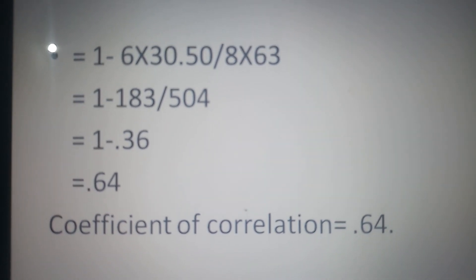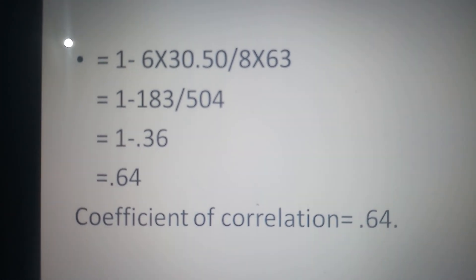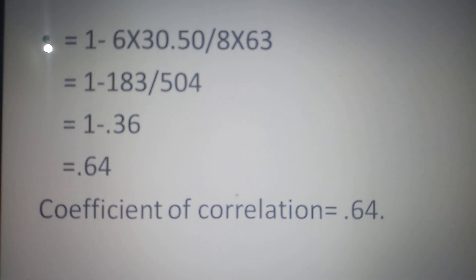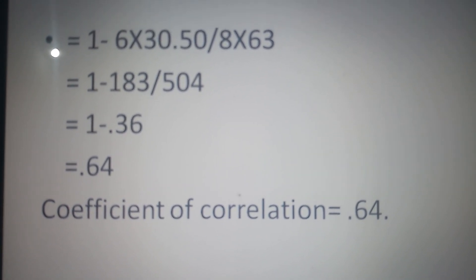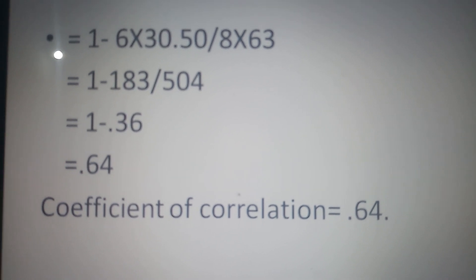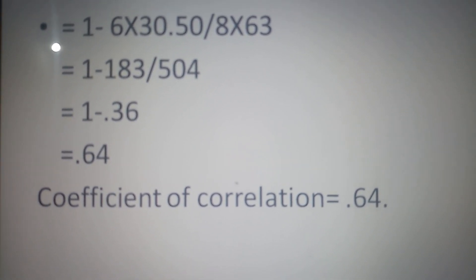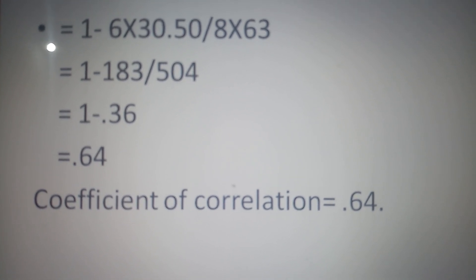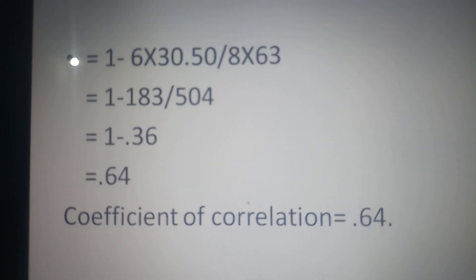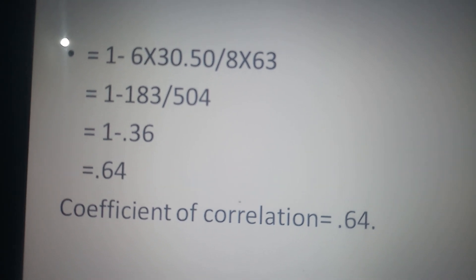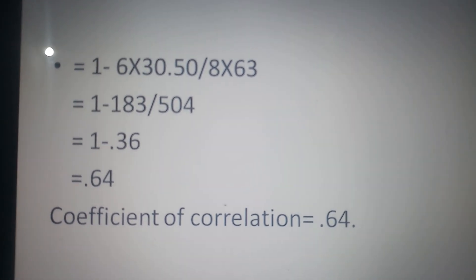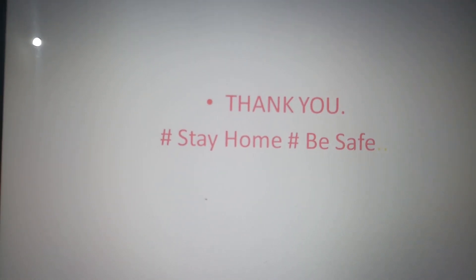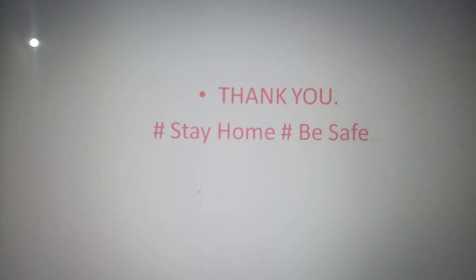So the coefficient of correlation is 0.64. This is in the positive direction. We can find out the relationship either in a positive or negative way, and the relationship always ranges from 0 to plus or minus 1, not above that. I think all of you have understood this. Thank you, stay home, be safe.